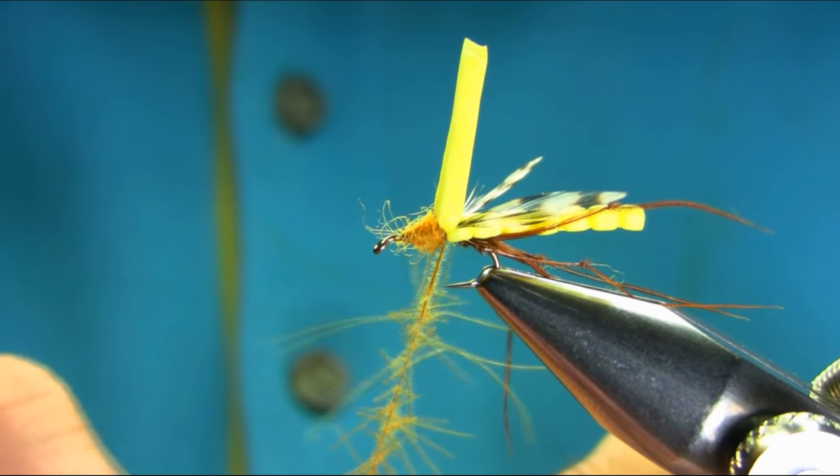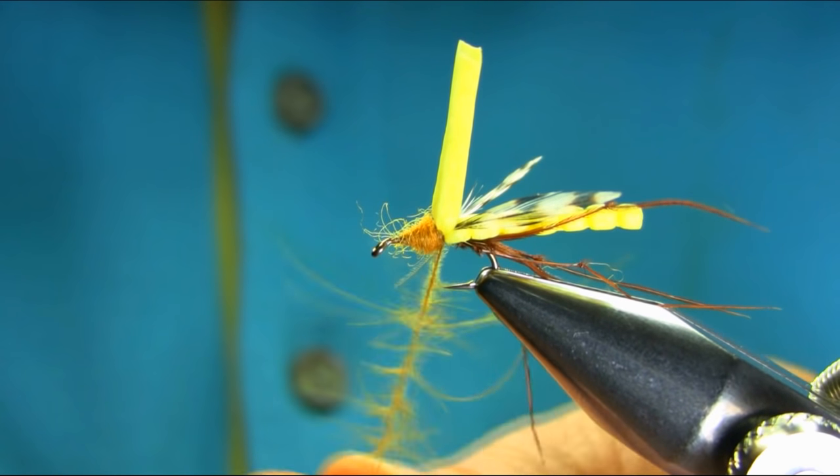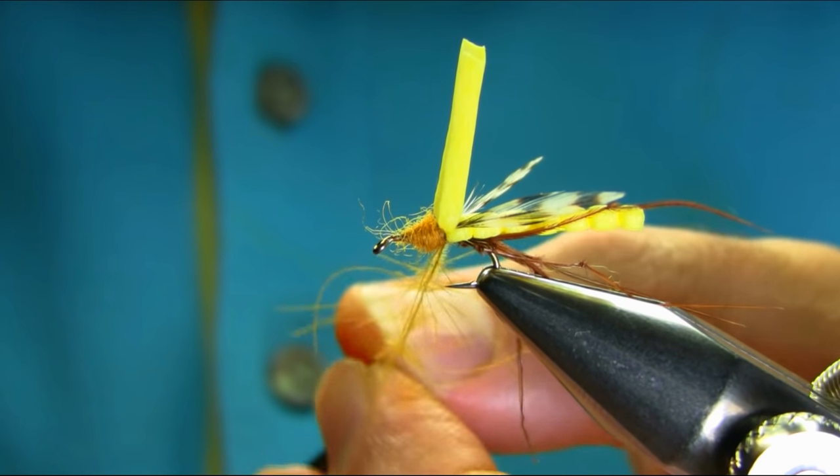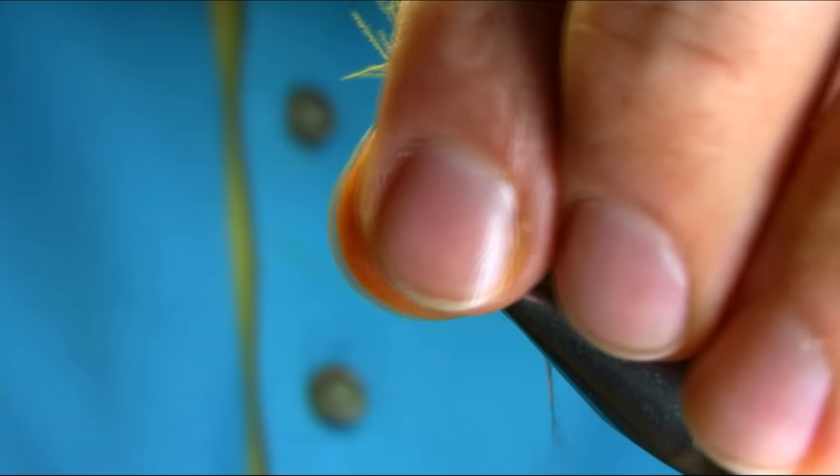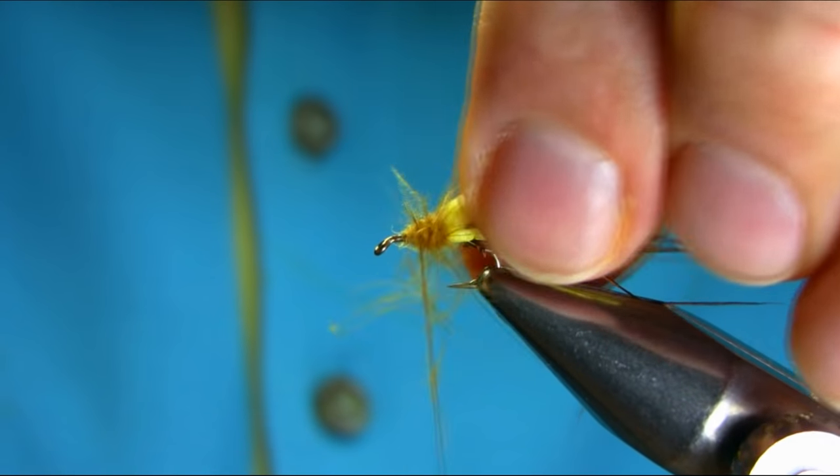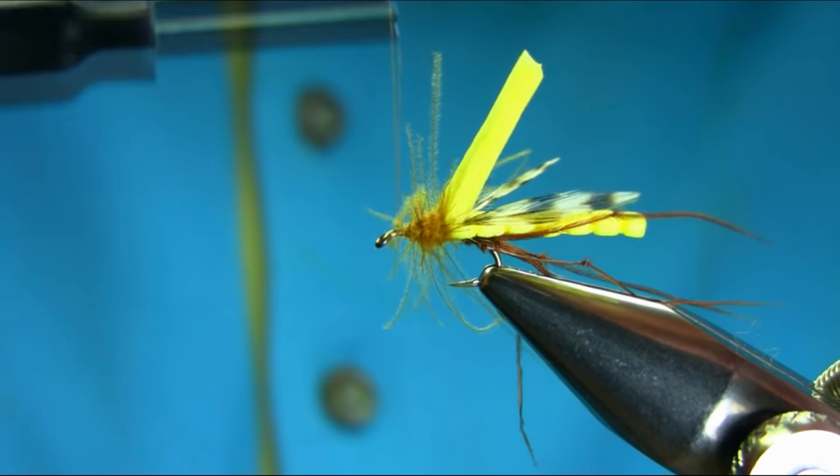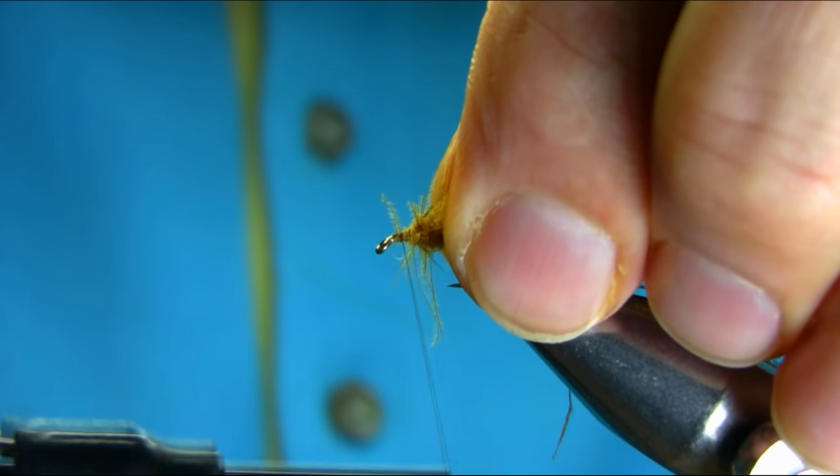Once you spin all the thread and cut this CDC, bring it closer. And just kind of give it a little stroke. And we need to leave enough place on the head side so we can catch foam.